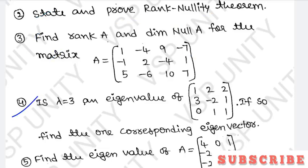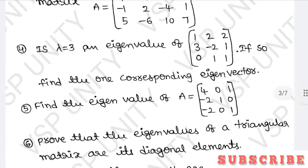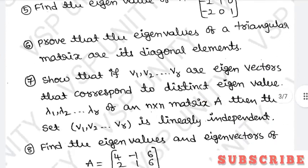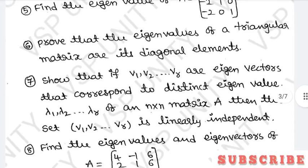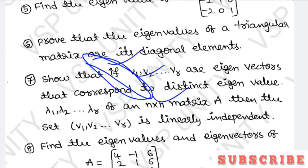Fourth question: is lambda equal to 3 an eigenvalue of a given matrix? We have to show that lambda equal to 3 is an eigenvalue of the given matrix, and if so, find the corresponding eigenvector. Fourth and fifth questions are the same concept. Sixth question: prove that the eigenvalues of a triangular matrix are its diagonal elements — meaning the diagonal entries of a triangular matrix are its eigenvalues.